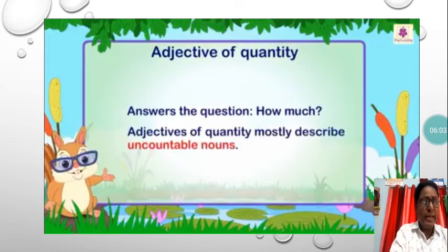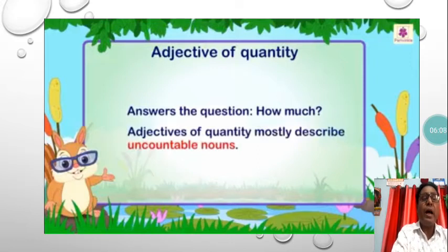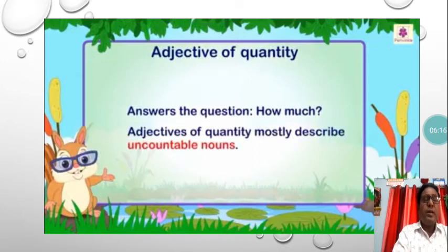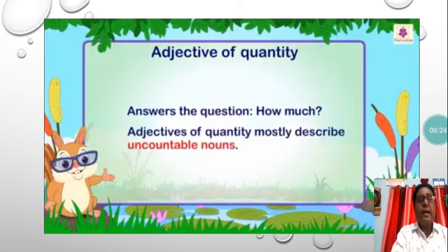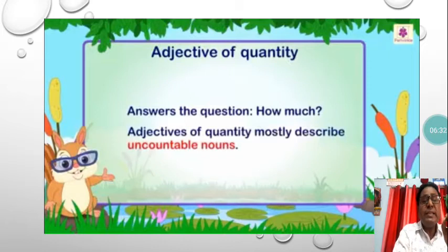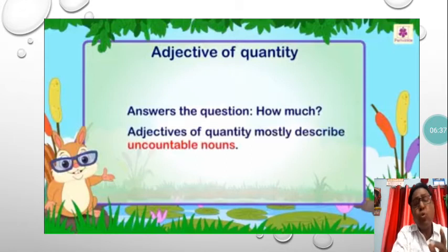The next one is adjective of quantity. We learned adjective of quality; now we have adjective of quantity. Adjective of quantity tells the quantity of something and answers the question: how much? Adjectives of quantity mostly describe uncountable nouns. You know there are two kinds of nouns: uncountable and countable. Countable nouns are the nouns which can be counted.